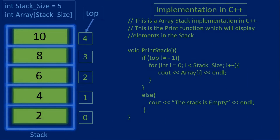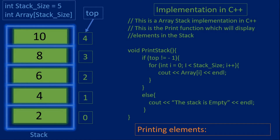The first function will print out the stack, and if you have printed out an array before, this will be the same. This function will be a void function. The first thing the function will check is if the stack is empty, and since we have elements in the stack we enter the if statement. The for loop will print out the values or the elements in the stack.